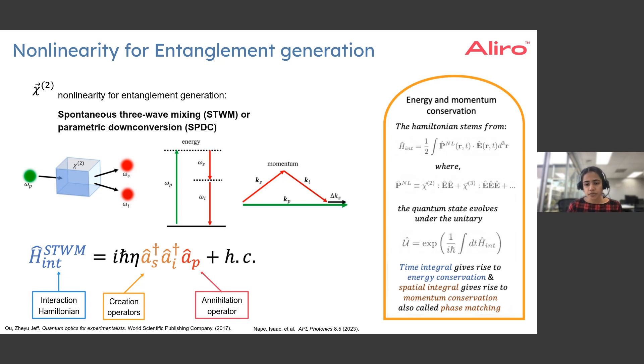Using this Hamiltonian, we can write down the unitary evolution operator, which essentially determines how these fields evolve in the crystal as we propagate through time and through the length of the crystal.